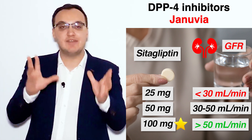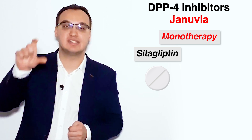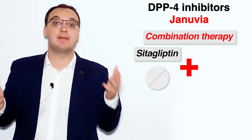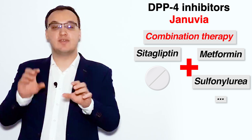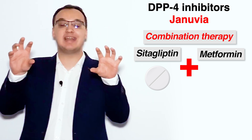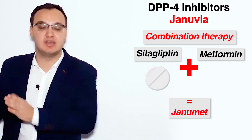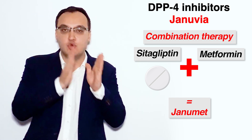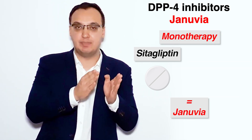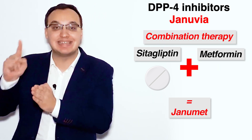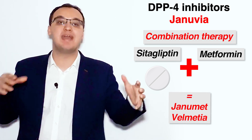We can give Januvia alone as monotherapy, or as combination therapy with metformin, sulfonylureas, or other medications. When combined with metformin, the trade name changes to Janumet. Januvia is the monotherapy — sitagliptin only — while Janumet is sitagliptin plus metformin.